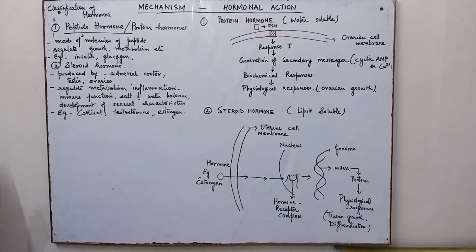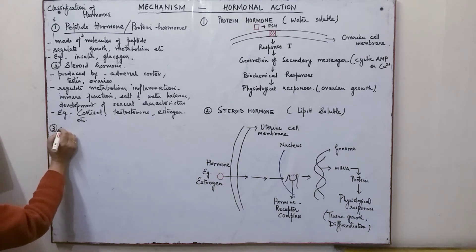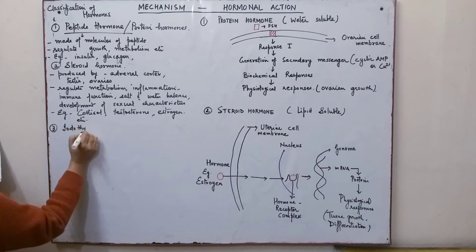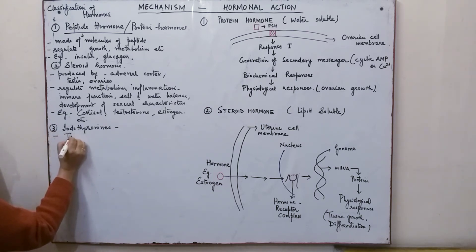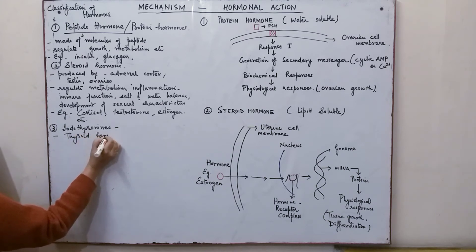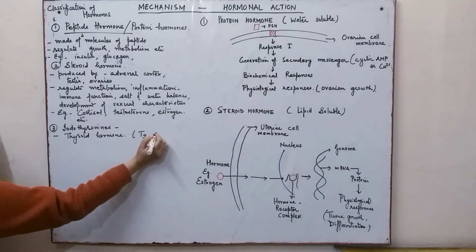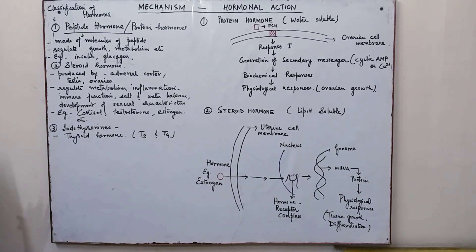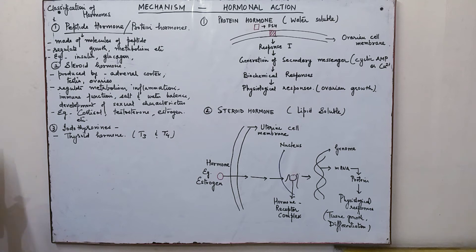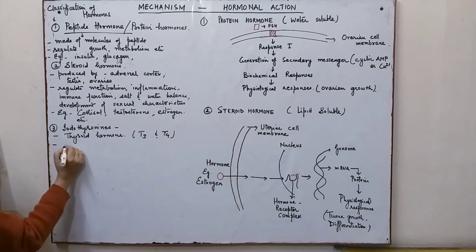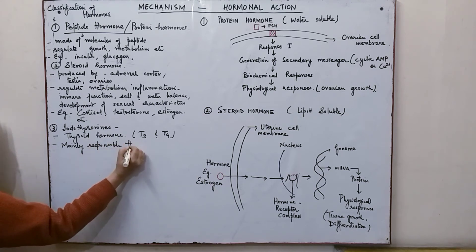The third category is iodothyronines, which are thyroid hormones produced by the thyroid gland — triiodothyronine (T3) and thyroxine (T4). They are named 'iodo' because their production mainly depends on iodine. They are mainly responsible for regulating metabolism.